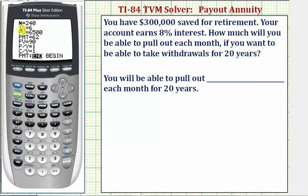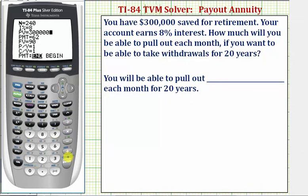The interest rate I is 8%, so we enter 8 and press enter. The present value is $300,000, so we enter 300,000 and press enter.